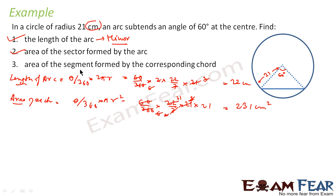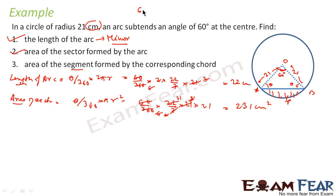Now we have to find the area of the segment formed by the corresponding chord. Area of segment equals area of sector minus area of triangle. Let the triangle be OAB. Since OA = OB = 21 cm (both radii) and the angle at O is 60 degrees, the other two angles are both theta. Solving: 60 + theta + theta = 180 degrees gives 2 theta = 120, so theta = 60 degrees. All angles are 60 degrees, so it is an equilateral triangle.